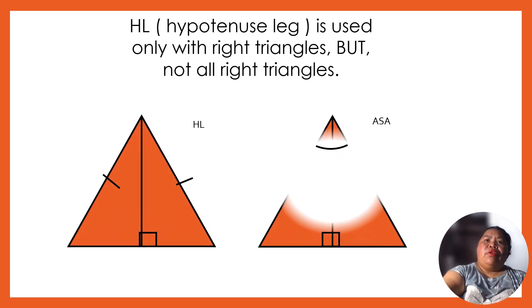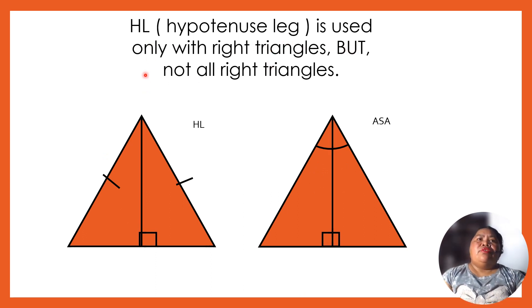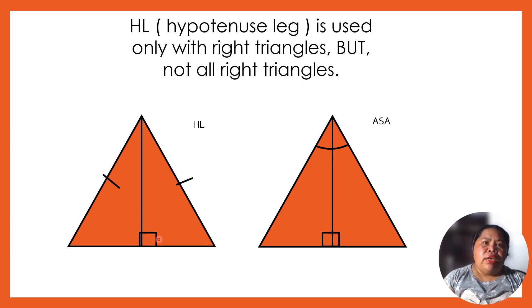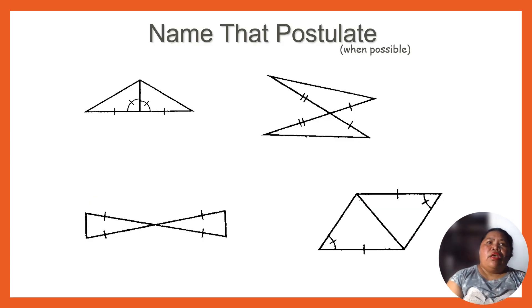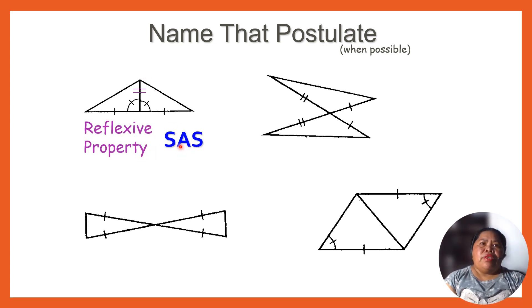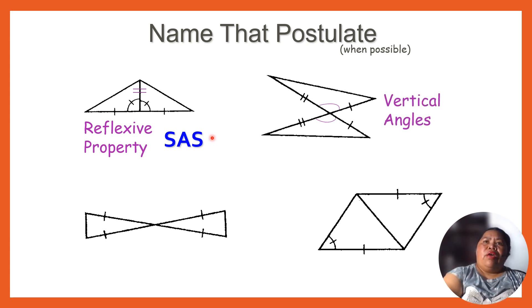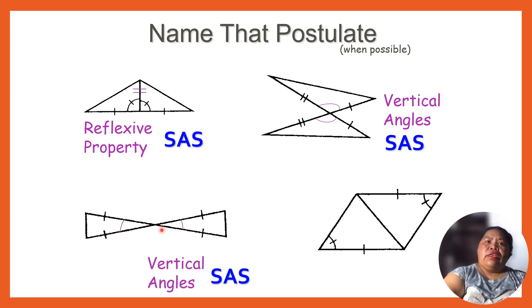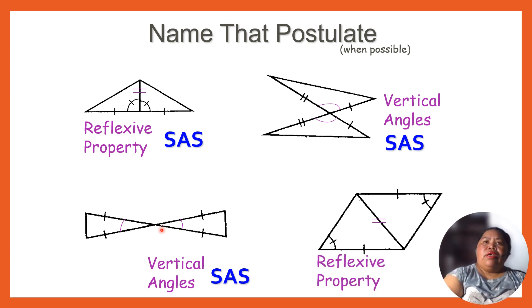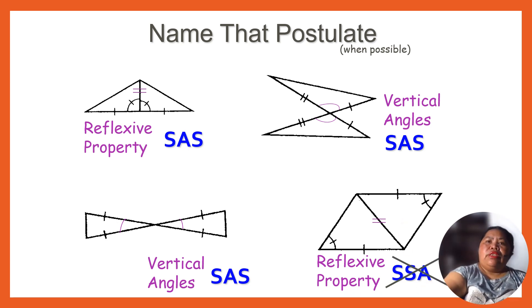The HL or hypotenuse-leg is used only with right triangles, but not all right triangles. We have here the HL and of course ASA — angle-side-angle. Name the postulate: for the reflexive property we have SAS, and we have vertical angles, so that is also SAS. Same here — vertical angles — of course this is SAS. And this one also uses reflexive property — that would be SSS — side, side, side. But SSA — side-side-angle — is not valid.